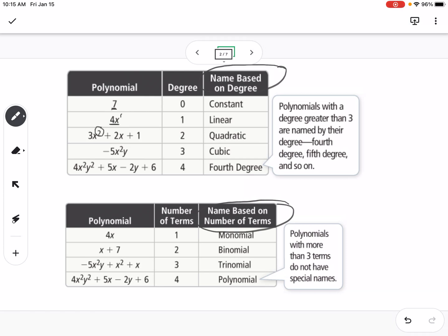This one has a power of 2, so degree of 2, so it's quadratic. This one, we can add the powers. So we can see that x squared y to the first, so that would be degree 3, which is cubic.